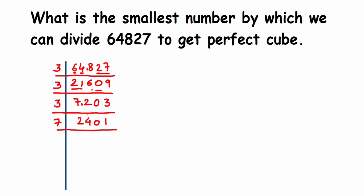Seven times 3 is 21, remainder 3, making 30. Seven fours are 28, remainder 2, making 21. Seven times 3 is 21 again, giving us 343. Now 343 is divisible by 7 — it's actually 7 cubed. Seven fours are 28, remainder 6, making 63. Seven nines are 63, then 49. Seven sevens are 49, and seven ones are 7.